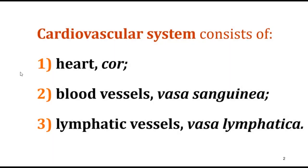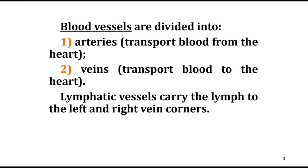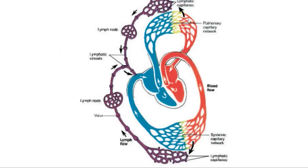The cardiovascular system consists of three components: the heart, blood vessels, and lymph vessels. Blood vessels are divided into arteries, which transfer blood from the heart, and veins, which transfer blood to the heart. Lymphatic vessels carry lymph. We can distinguish the pulmonary and systemic circulation, as well as the microcirculatory bed.